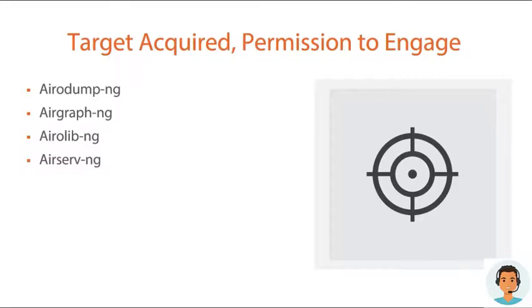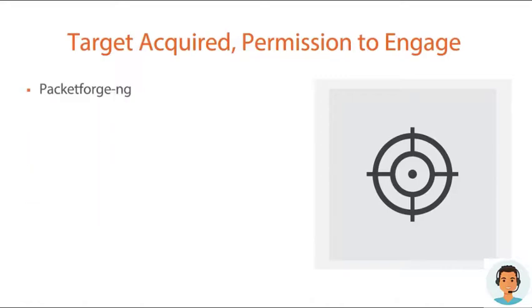We also have Airserv-ng — a wireless card server that allows multiple wireless applications to independently use the wireless card in a client-server connection. Airmon-ng is used to enable the wireless network card to start monitoring the wireless interface and looking for access points. Airtun-ng is a virtual tunnel interface creator with two functions: it can monitor all encrypted traffic for use as a wireless intrusion detection system, and it can also inject arbitrary traffic into the network.